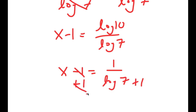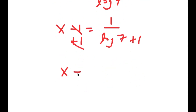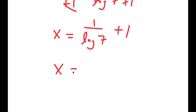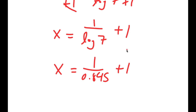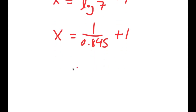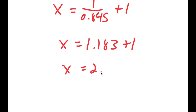And now I can add 1 on both sides, so I get x is equal to 1 over log 7 plus 1. Now log 7 is equal to 0.845, so I have 1 divided by log 7, which gives 1.183 plus 1, which is equal to 2.183.